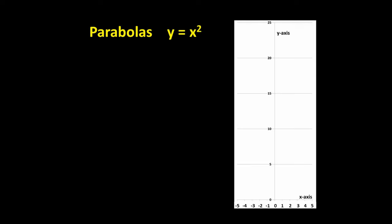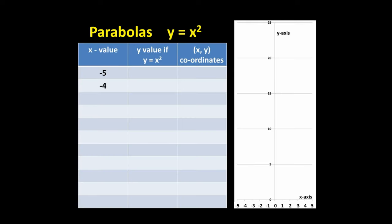A parabola is the curve produced on a Cartesian plane by the general equation y equals x squared. Let's draw a parabola taking the x values from negative five to positive five. Since y equals x squared, when x equals negative five, y equals negative five squared, which is twenty-five. We can plot the point (-5, 25) on the graph here.